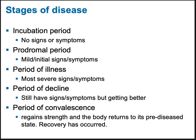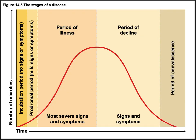The period of illness is the time where you have the most severe signs and symptoms. The period of decline is when you start to feel better but still have some symptoms. The period of convalescence is where you are regaining your strength and no longer suffering from that infection. Each disease has its own specific length and range of time.